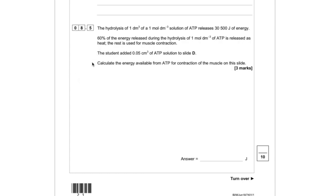So here we've got our energy being released from this amount of ATP. And 60% of this is being released as heat, which means the remaining 40% is being used for muscle contraction. Which gives us 12,200 joules.